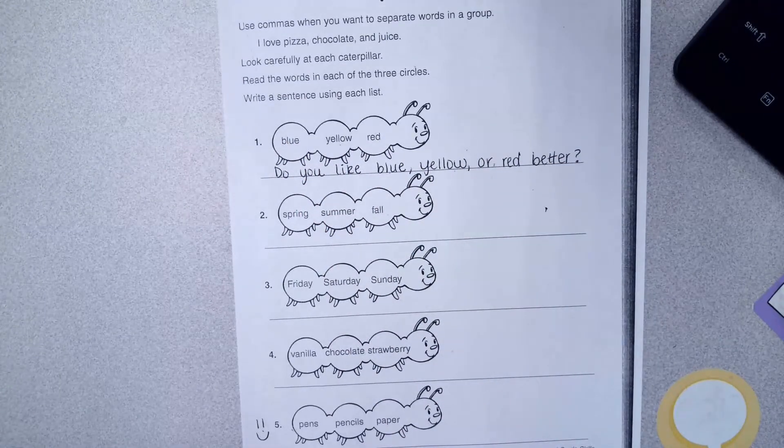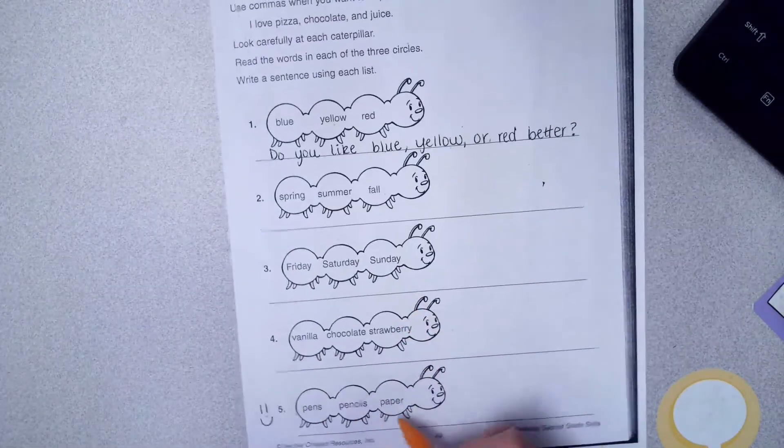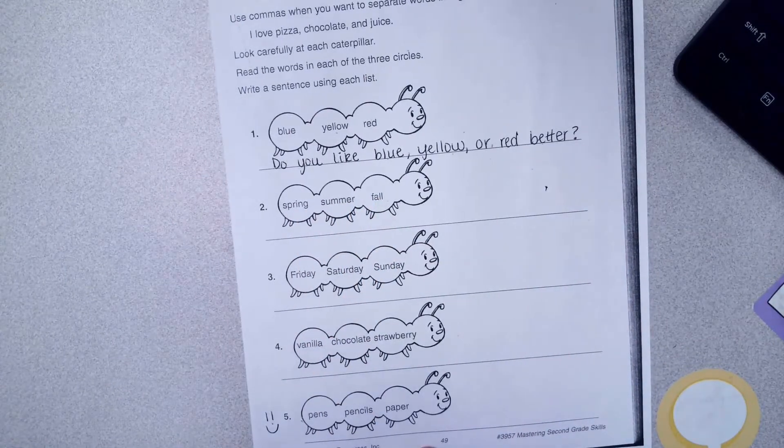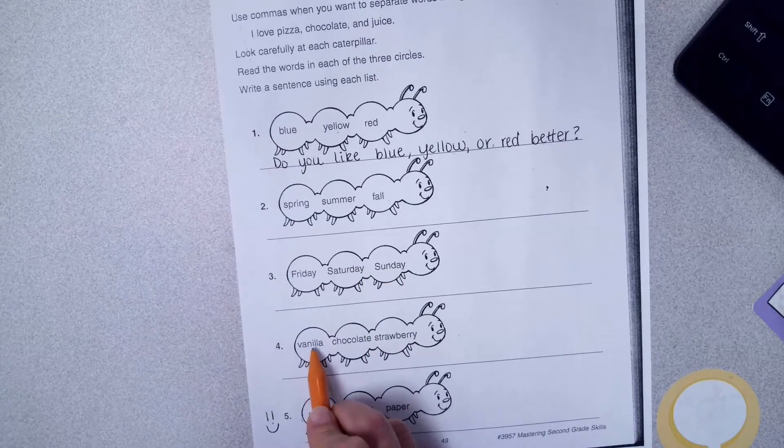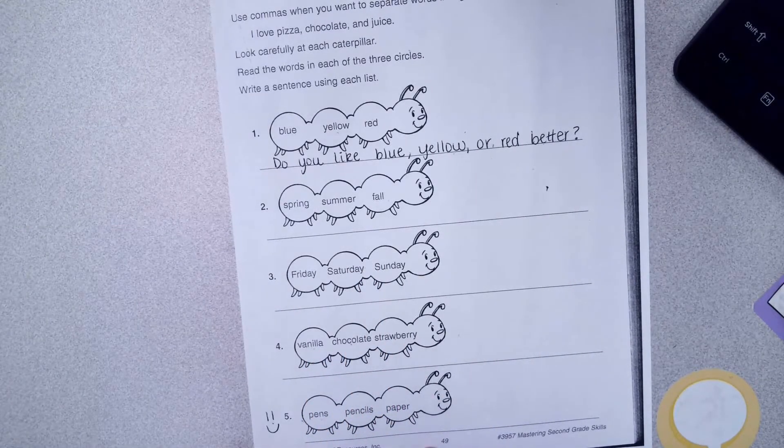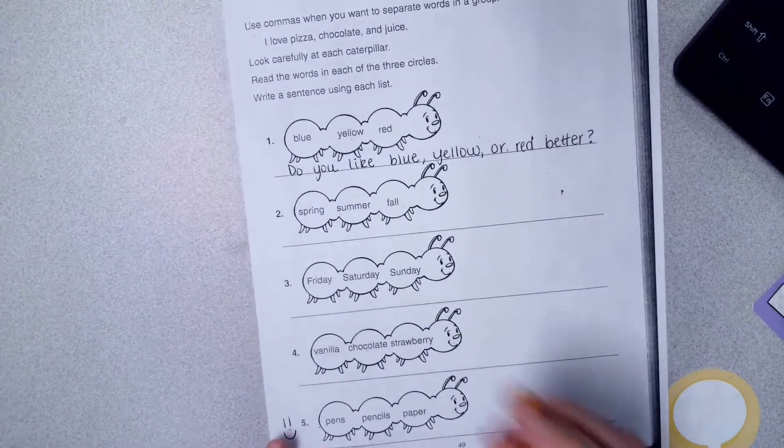Okay, so the next of your caterpillars say: spring, summer, fall; Friday, Saturday, Sunday; vanilla, chocolate, strawberry; pen, pencils, paper. For number two, I might say...